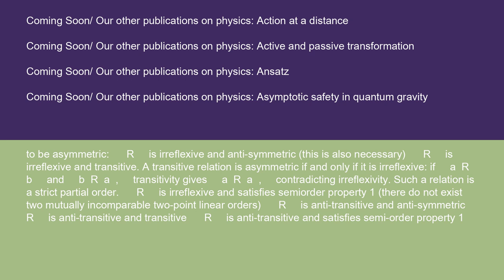If a R b and b R a, transitivity gives a R a, contradicting irreflexivity. Such a relation is a strict partial order.